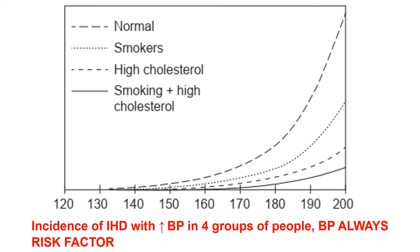This curve shows the incidence of ischemic heart disease with increased blood pressure in four groups of people. The x-axis is blood pressure and the y-axis is percentage. The highest curve is for smoking and high cholesterol combined, followed by high cholesterol alone, then smokers alone, and finally the normal group at the lowest risk.